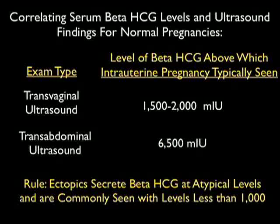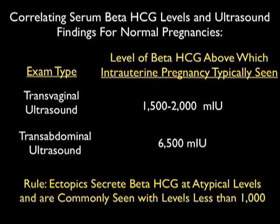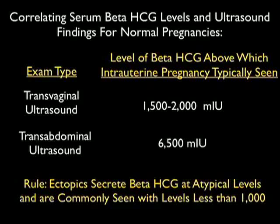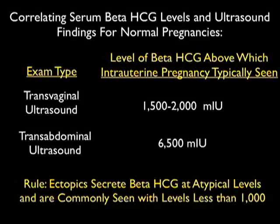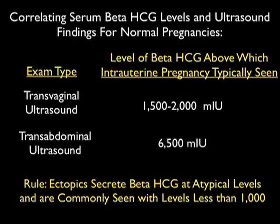An important concept for OBGYN sonography is the correlation of serum beta-HCG to findings of a normal pregnancy. For transvaginal sonography, the discriminatory zone at which we expect to see an intrauterine pregnancy is about 1,500 to 2,000 milli-international units. For transabdominal sonography, it's about 6,500 milli-international units. This rule does not apply to ectopic pregnancies, which secrete beta-HCG at atypical levels — they can be seen with betas lower than 1,000 and as high as 30,000.